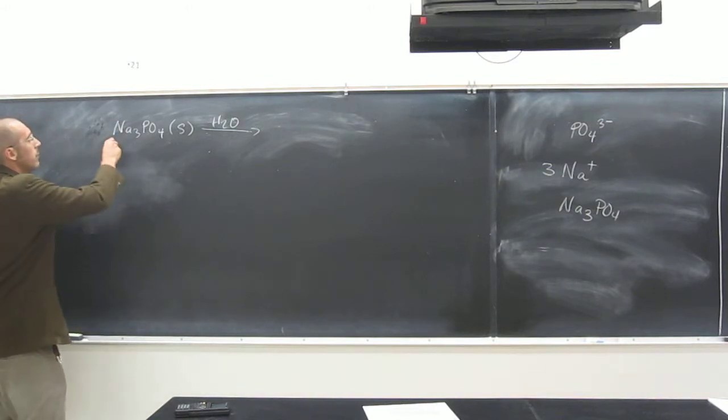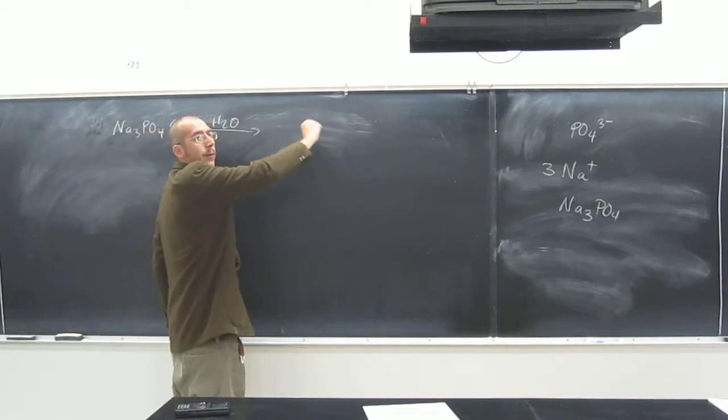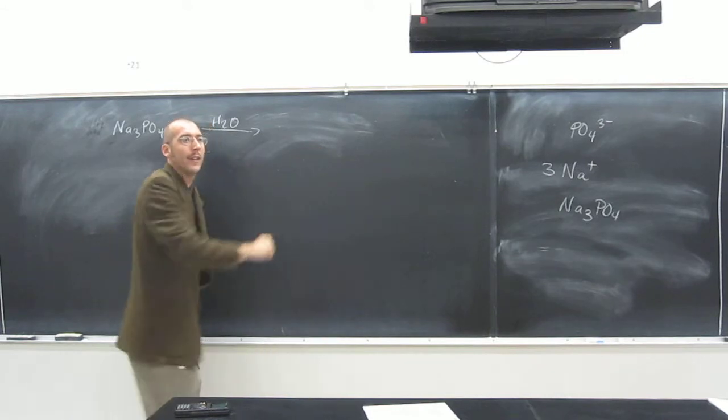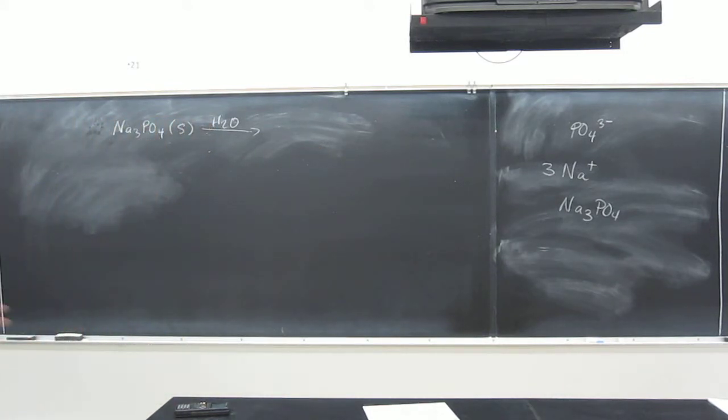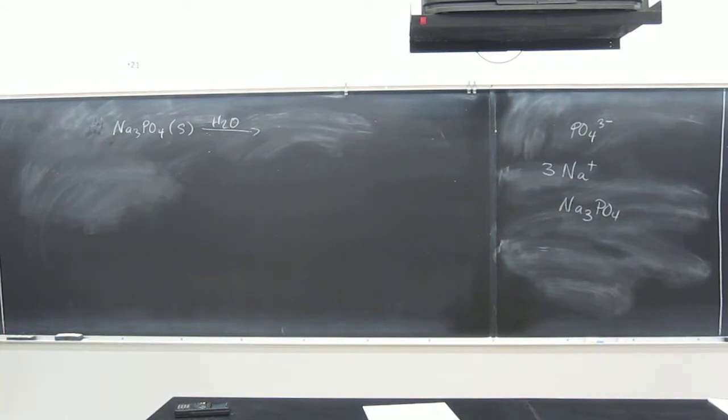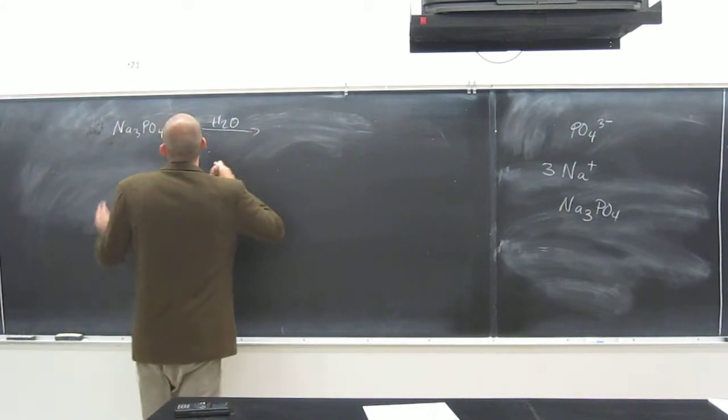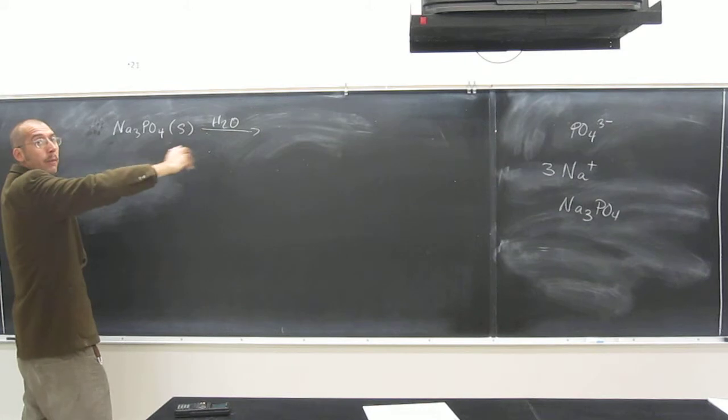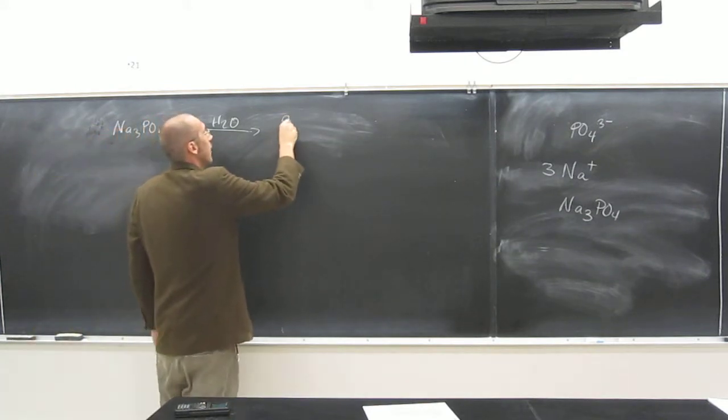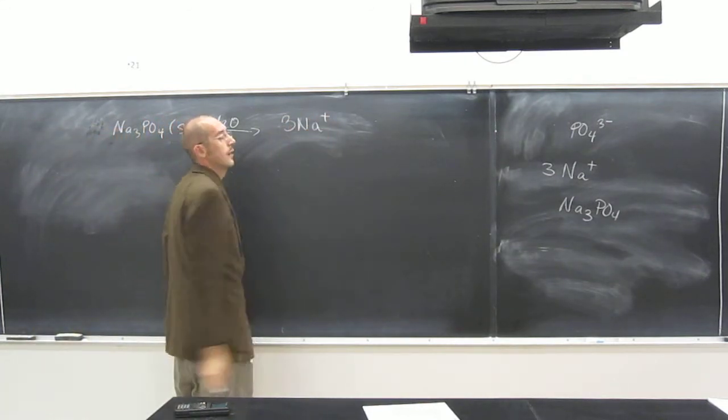So a lot of people want to keep this as Na with the 3 behind it, okay, as a subscript. So that's incorrect, because that means that all of those Na's are stuck together. So instead, those Na's all break apart, right? So we've got three Na pluses, like that.